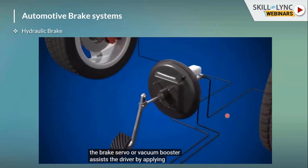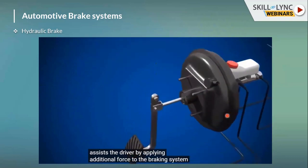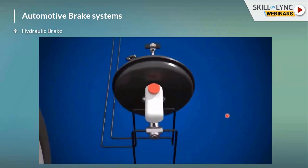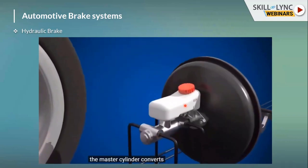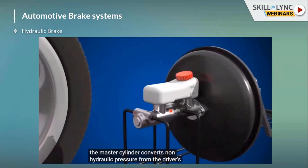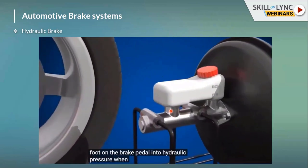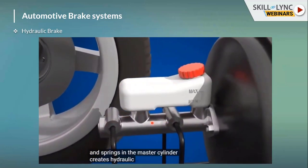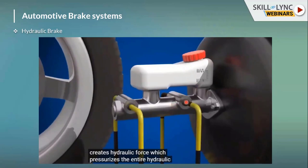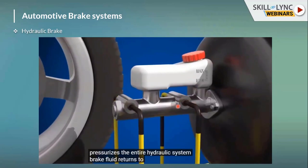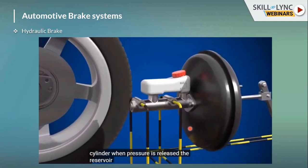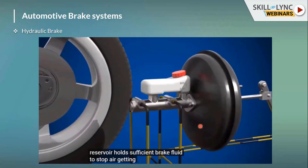The master cylinder converts the driver's input into hydraulic pressure, which is distributed equally to all the wheels. When the brake is applied, you can see the pressure distributing to all the wheels.